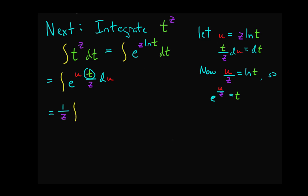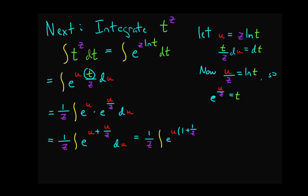Pulling 1/z out front, we have 1/z times the integral of e^u times e^(u/z) du. Combining the exponentials, this equals 1/z times the integral of e^(u + u/z) du. Factoring the exponent, this is 1/z times the integral of e^(u times (1 + 1/z)) du. We let a equal the constant 1 + 1/z, so the integral becomes 1/z times the integral of e^(a·u) du.